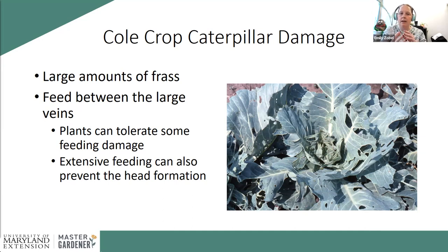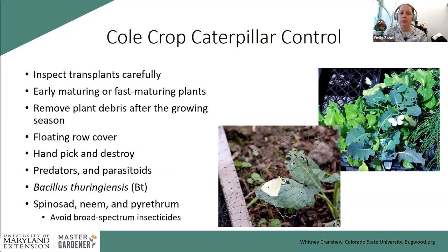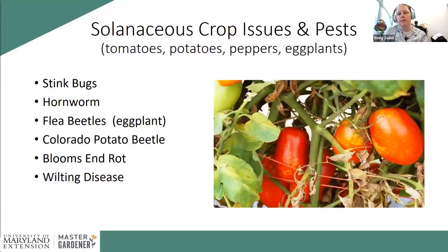Later in the season, plants can tolerate caterpillar feeding, but cabbage is one where you need to focus because they'll get into the head, and broccoli too — nobody wants to cook broccoli and find caterpillars. My biggest recommendation is using floating row covers, which completely excludes them; since these plants don't need pollination before harvest, it's the easiest approach. You can hand-pick them as well. Always check transplants at the store — cabbage white butterflies will lay eggs right on transplants in the garden center.